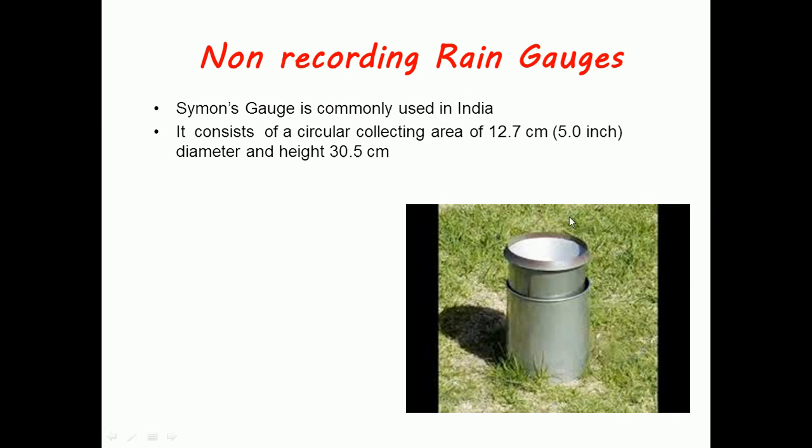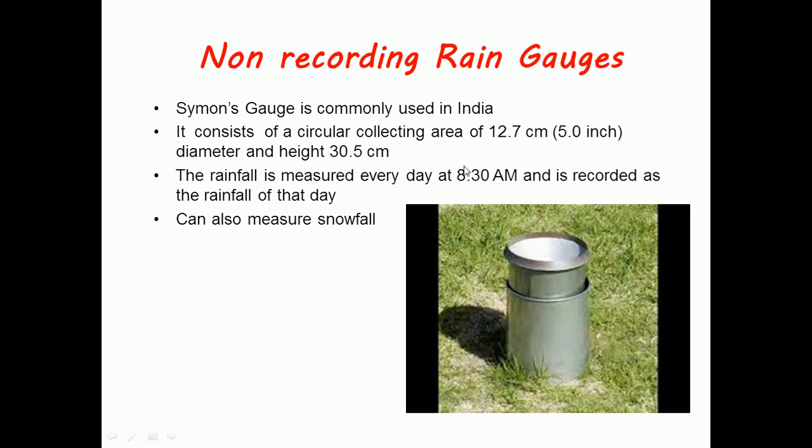As you can see from the figure, the rain is collected in this circular collecting area and is measured every day at 8:30 AM and recorded as the rainfall of that day. For example, 150mm is collected one day.